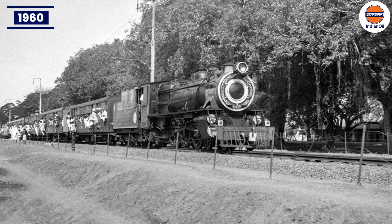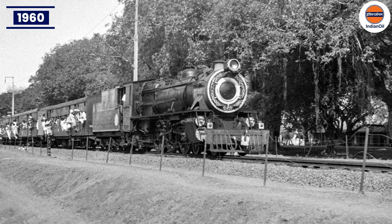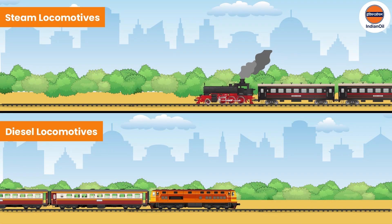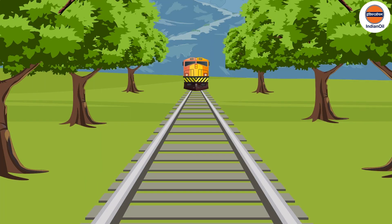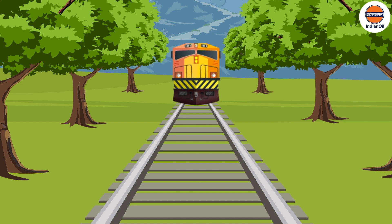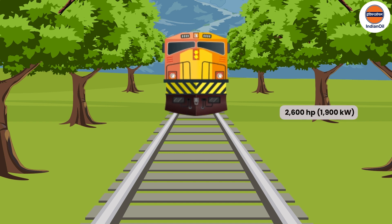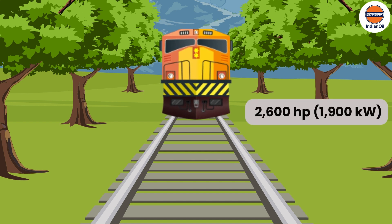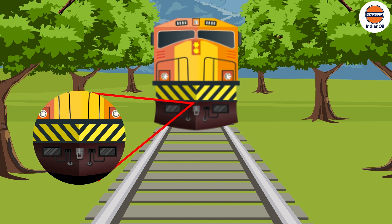In the early 1960s, Indian Railways aimed to replace its mainline steam locomotives with diesel locomotives. To achieve this, Indian Railways required building a large number of diesel locomotives producing at least 2600 horsepower with road switcher capabilities.